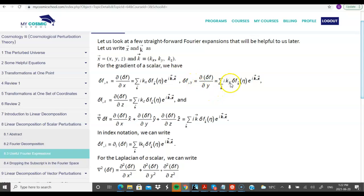When you do with respect to y, iota ky comes forward. When you do with respect to z, iota kz comes forward. And the gradient becomes this expression, iota k vector delta f k.